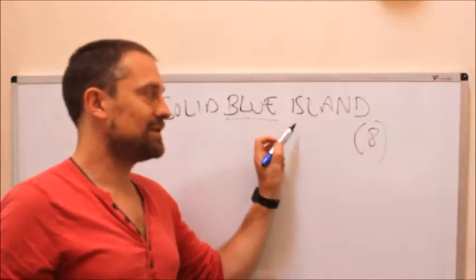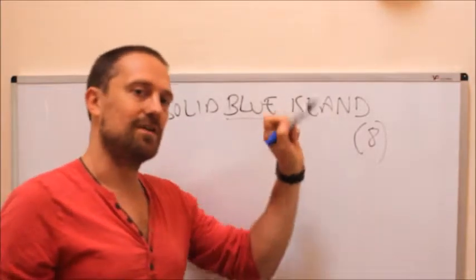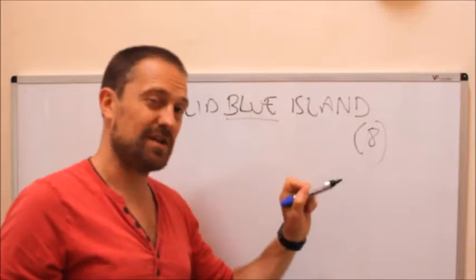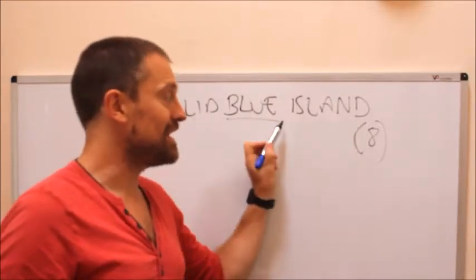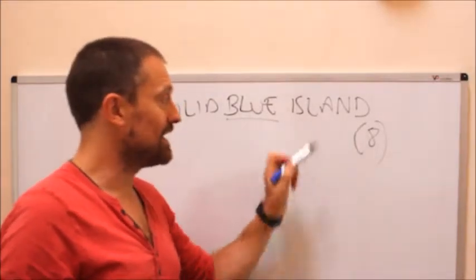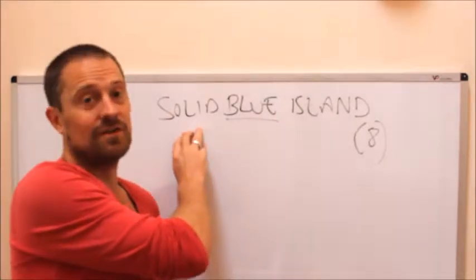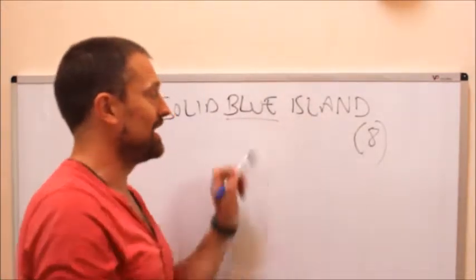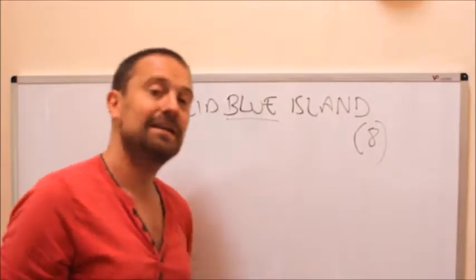Island has some obvious substitutions — you've got I, you've got IS, all sorts of things from map notation, but you've also got names of islands, so you could be working there. Solid has a lot of possible synonyms, so there's not really a clear way to play it except to focus on the word blue.